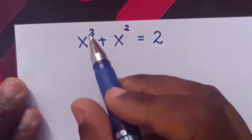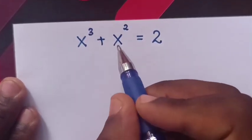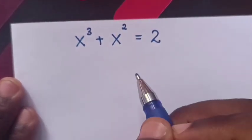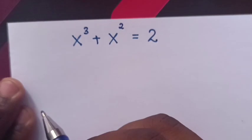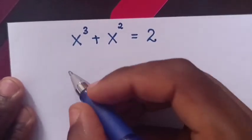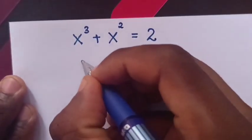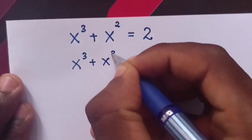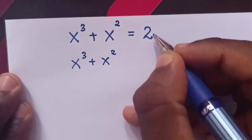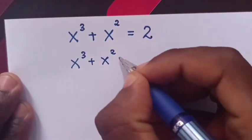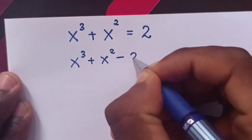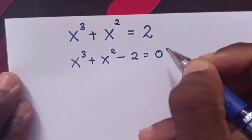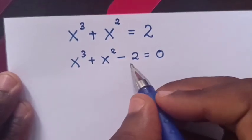Hello, to solve x cubed plus x squared equals 2, find the value of x. So it will be x power 3 plus x squared, this 2 we take to the left side, minus 2 is equals to 0.